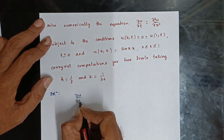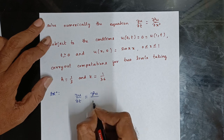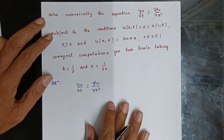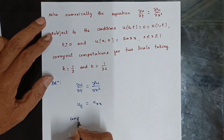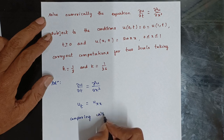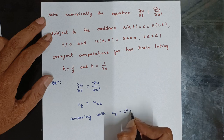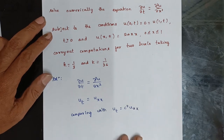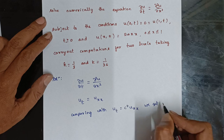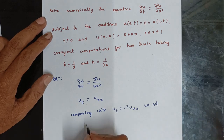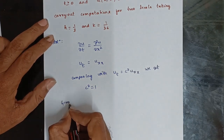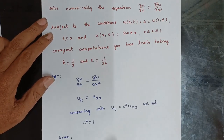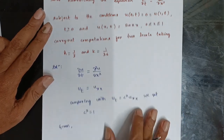We have ∂u/∂t = ∂²u/∂x². Comparing with the standard form u_t = c² · u_xx, we get c² = 1. Now the h and k values: h = 1/3, k = 1/36.